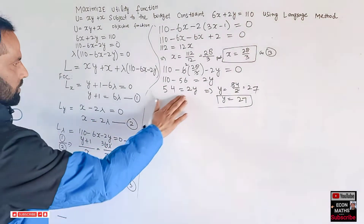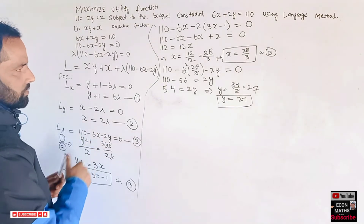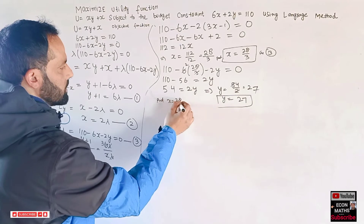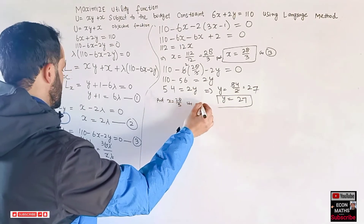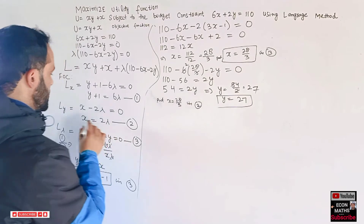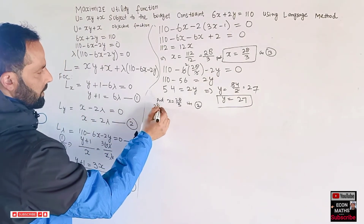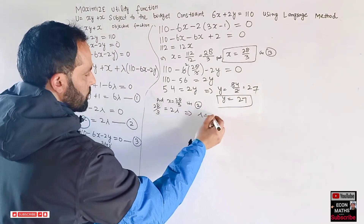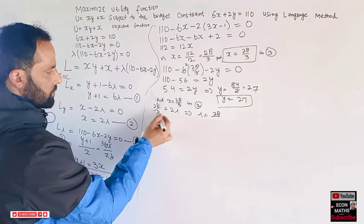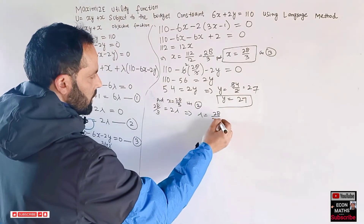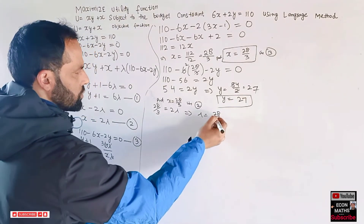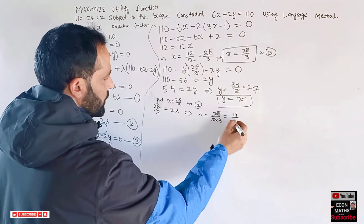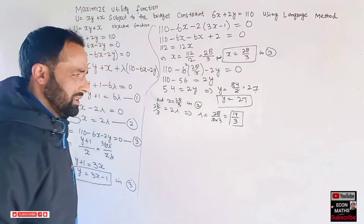Putting x = 28/3 into equation two: 28/3 = 2λ, which implies λ = 28/(2×3) = 28/6 = 14/3.